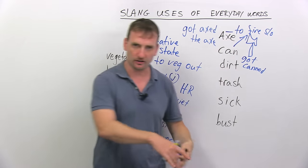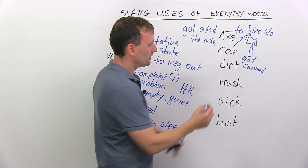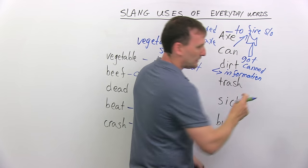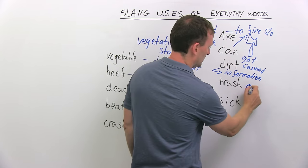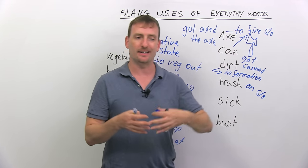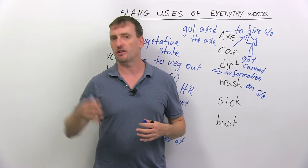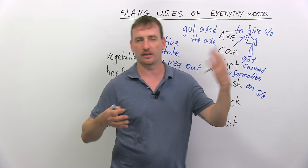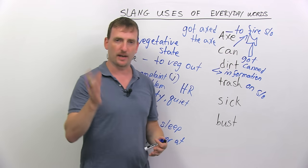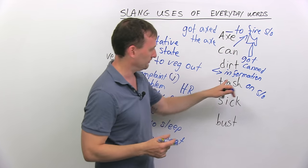Dirt. Again, you're thinking dirt on the ground — you sweep it, you wash it, you take a shower. But dirt can also mean information. When you have dirt on someone, you have secret information, and it's information that can hurt this person. So if you're a politician and you have good dirt on your opponent, you can embarrass them in the media and win your election. If someone has dirt on you, you should be very worried.